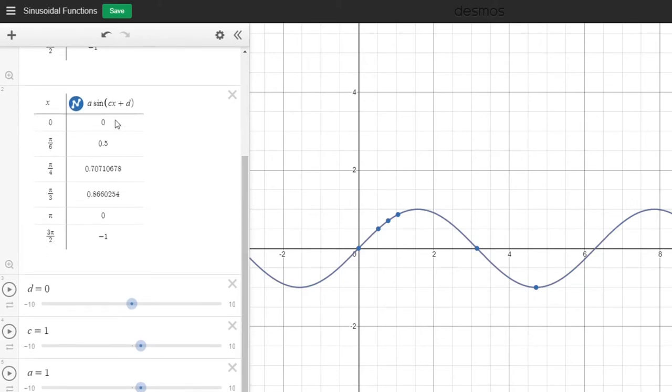So just know that in this case, D is in the parentheses here with the X, and it's causing a horizontal translation.